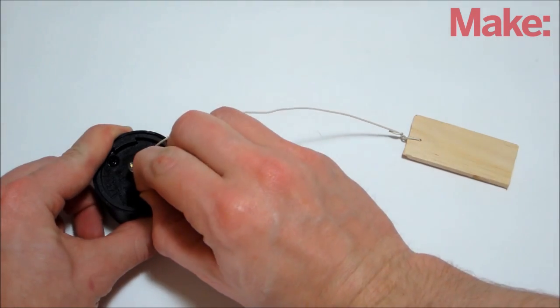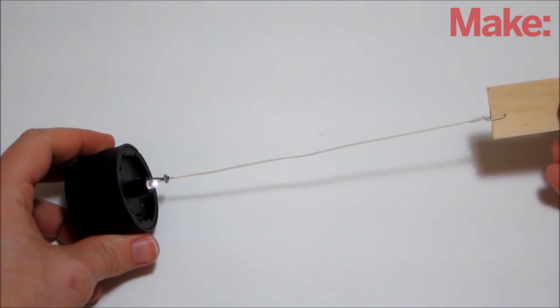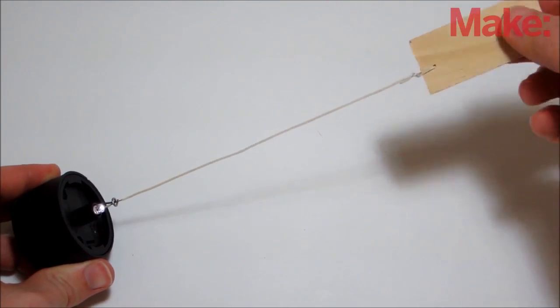Now, remove the insulating tab from the battery connector and you can try it out to make sure it works. When you move the wire around, it should come in contact with a loop and complete the circuit. This will turn on the LED.